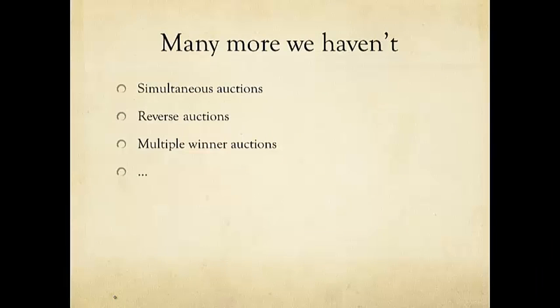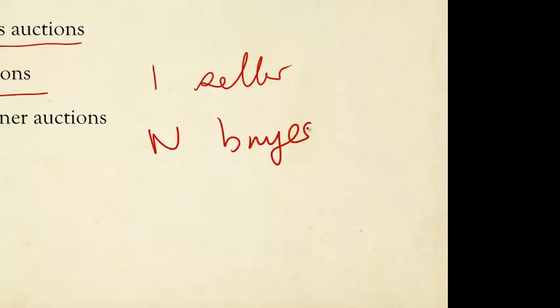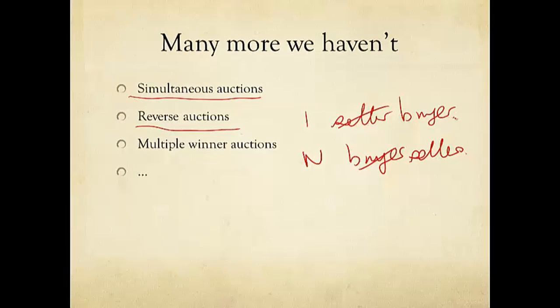But there are many more variants of auction we have not covered. For example, we just mentioned simultaneous auctions running in parallel. There's also reverse auction. Instead of one seller and n buyers, we may have one buyer and n sellers. For example, toxic financial assets to be purchased by the U.S. Treasury Department in the peak of the financial crisis last time. A lot of financial firms want to sell these toxic assets to a single buyer, which is the government, and the auction is reversed. So instead of everybody trying to bid higher, everybody tries to sell at a lower price so that the buyer will be interested.